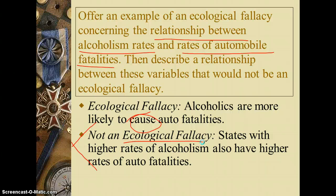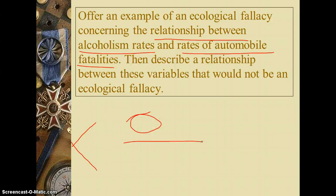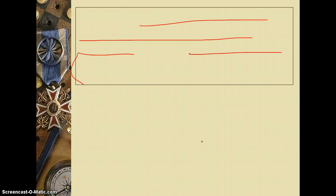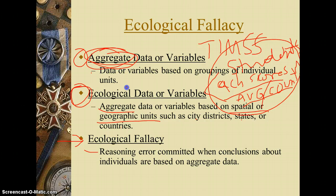So we have reviewed a couple of things in this second part of our quantitative analysis. We've looked at examples of mutually exclusive and collectively exhaustive values for variables, and we've looked at ways that we can commit reasoning errors by using aggregate and ecological data to draw incorrect causal relationship statements. We need to avoid those by understanding what it means to be aggregate, what it means to be ecological, and what it means to commit this reasoning error when conclusions about individuals are based on aggregate data.